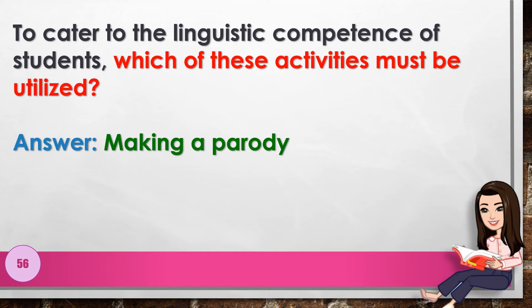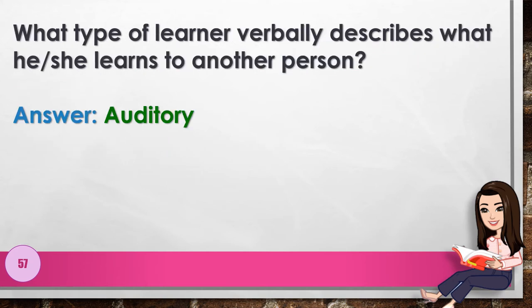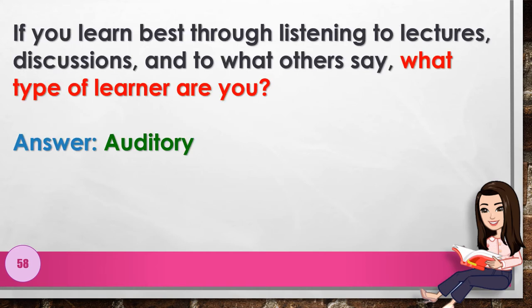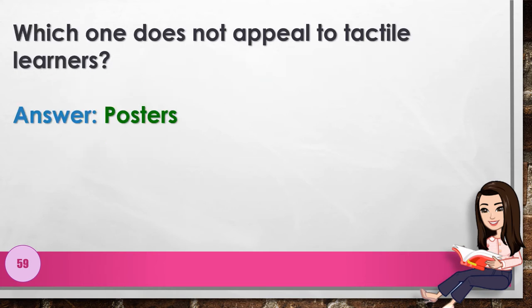Answer: making a parody. Number 57: What type of learner verbally describes what he or she learns to another person? Answer: auditory. Number 58: If you learn best through listening to lectures, discussions, and to what others say, what type of learner are you? Answer: auditory. Number 59: Which one does not appeal to tactile learners? Answer: posters.